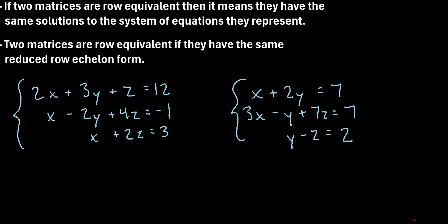In this video we will talk about how to determine if two matrices are row equivalent. So what does that actually mean — row equivalent? Well, we say that if two matrices are row equivalent, then it means they have the same solutions to the system of equations that they represent. The way to find out if two matrices are row equivalent is to take both matrices to reduced row echelon form and see if they have the exact same reduced row echelon form, because if they do, that means they're row equivalent and in turn have the same solutions.